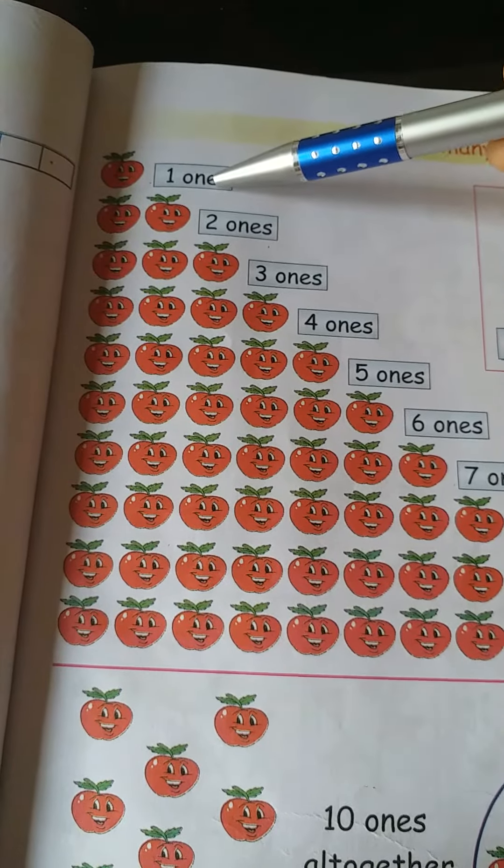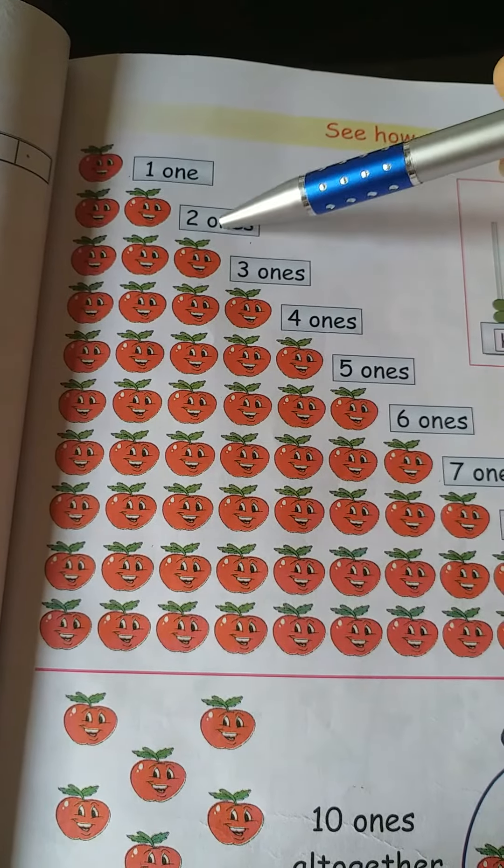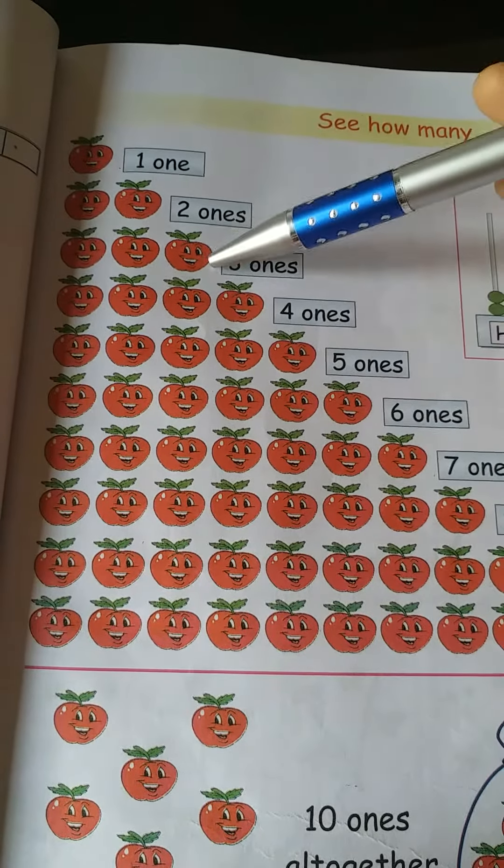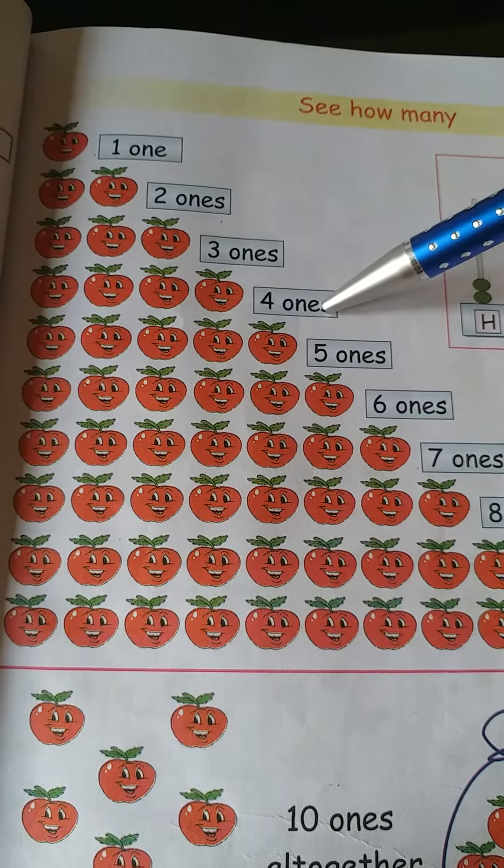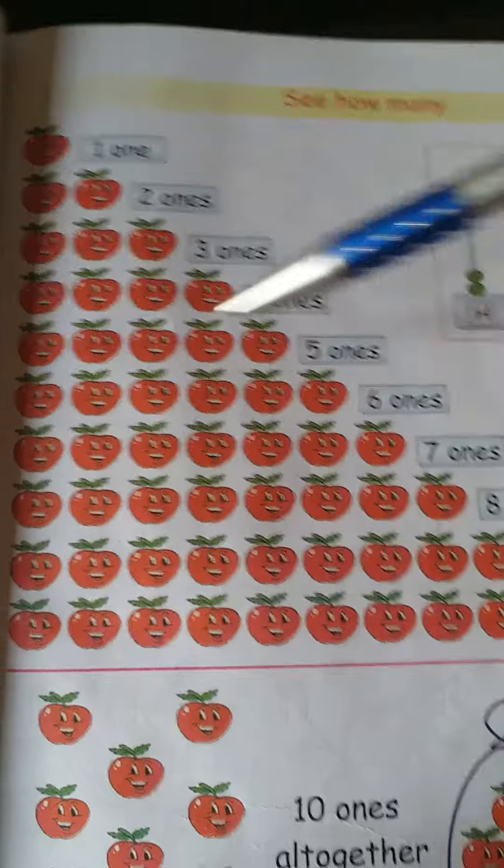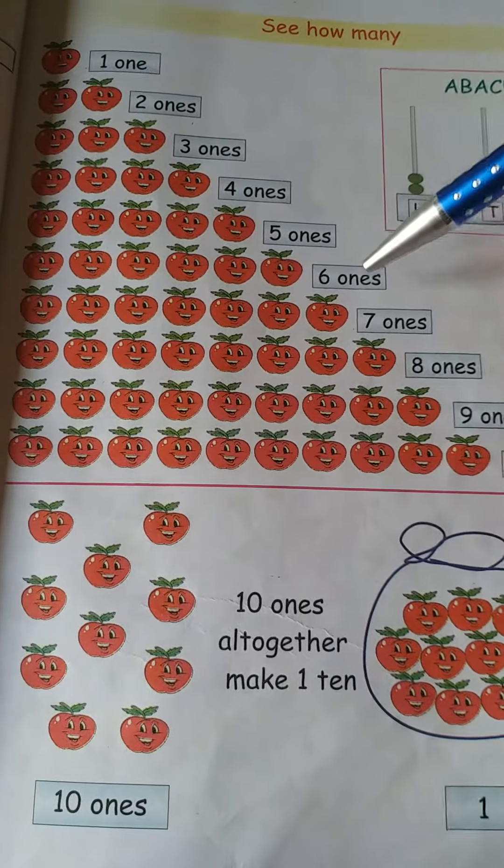That's why we can say one, one. Two apples are there, two ones. Three apples are there, three ones. Four apples are there, four ones. Five apples are there, five ones. Six apples are there, six ones.